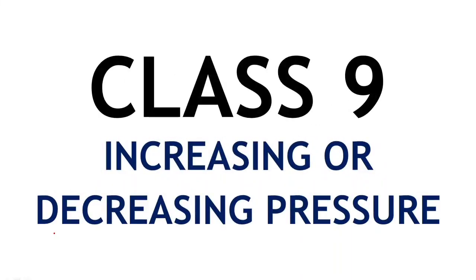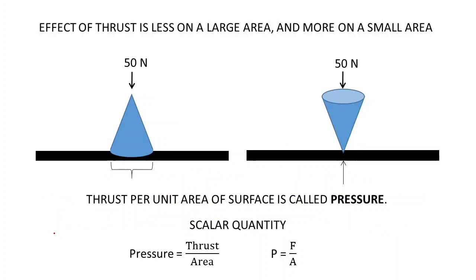Welcome, Class 9. Today's topic is increasing or decreasing pressure. In the last class we learned how the effect of thrust becomes less on a large area and more on a small area. When the area was large, the effect of thrust was less, so we say the pressure is less. When the surface area is less, the pressure is more, since pressure equals thrust divided by area.